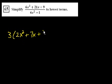Problem 65. They want us to do it again. This top expression, everything's divisible by 3. Let's factor out a 3. So it's 3 times (2x squared plus 7x plus 3).